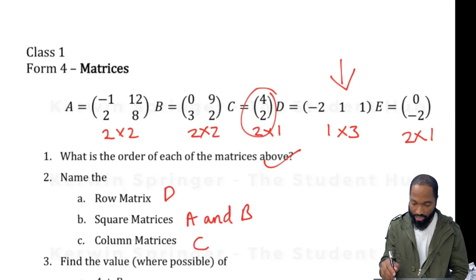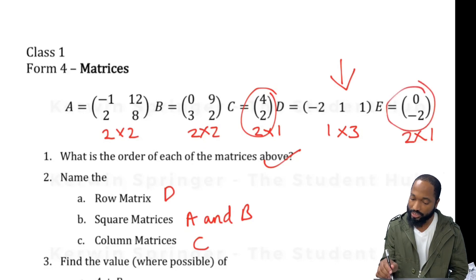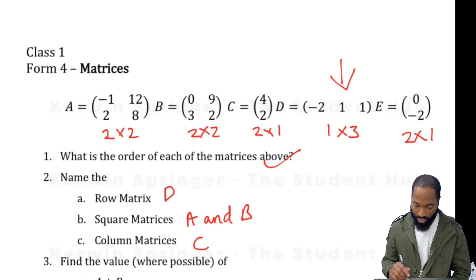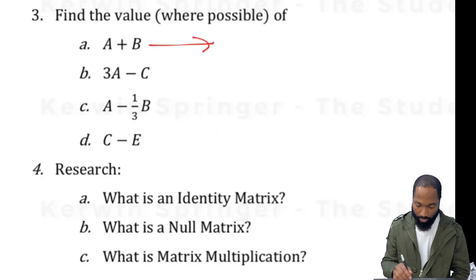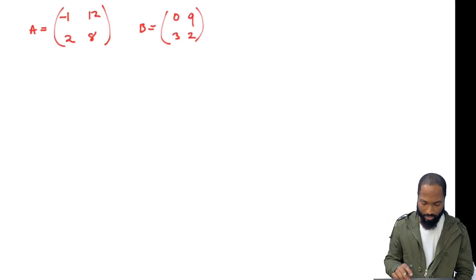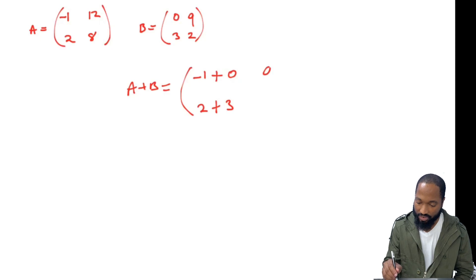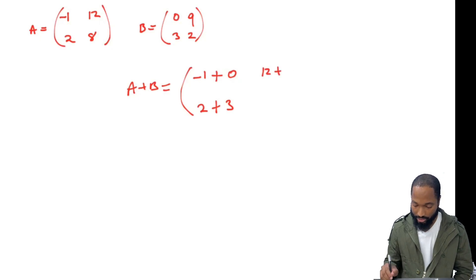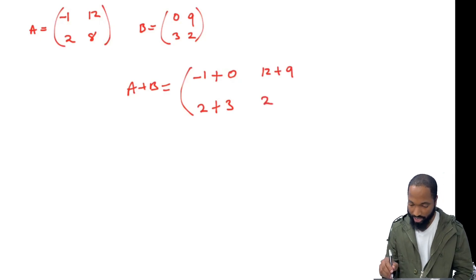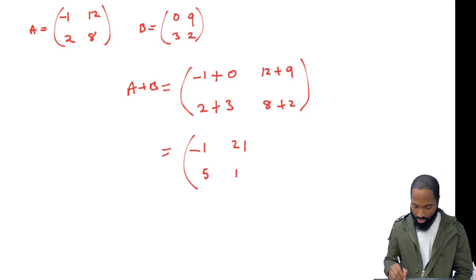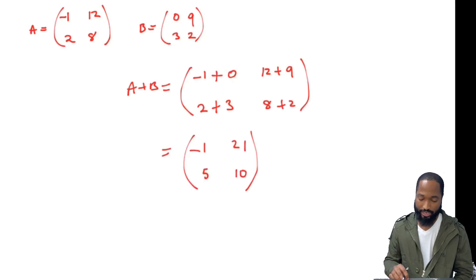The column matrices would be C and E. Find the values of A plus B — so if I say A plus B, it's going to be the addition of the individual corresponding elements in A and B, and this should be the answer you get. Verify that and let me know if you see any mistakes.